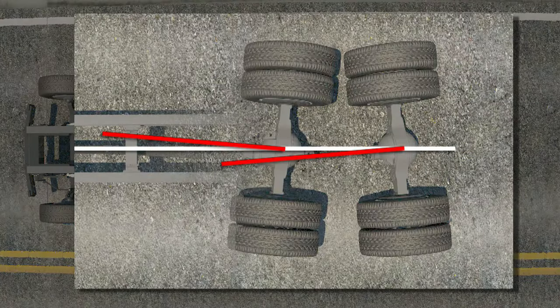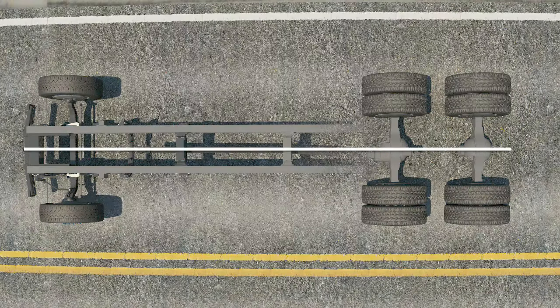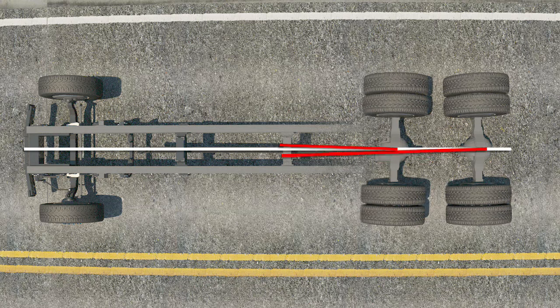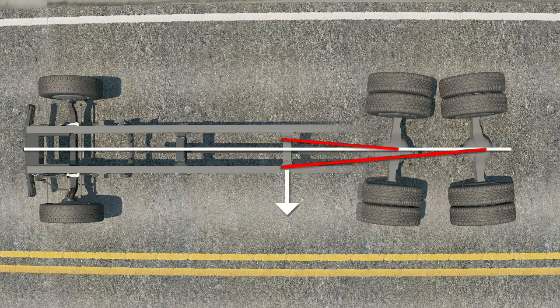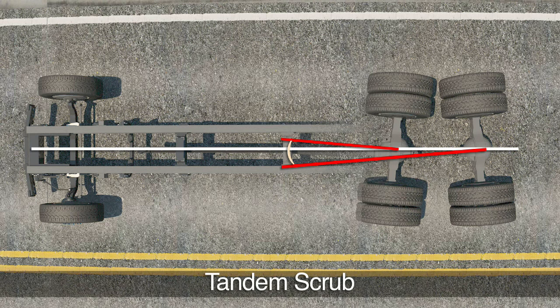On a tandem axle vehicle, certain thrust angle conditions can combine to create a scrub angle. In this example, the rearmost axle is pointed to the left while the forward axle is pointed to the right. When the thrustlines are combined, a scrub angle is formed.